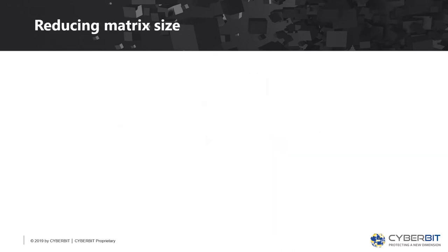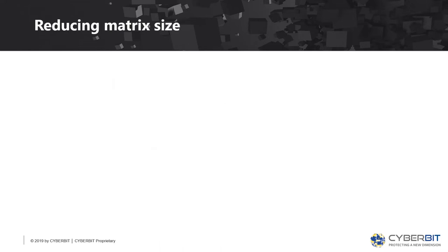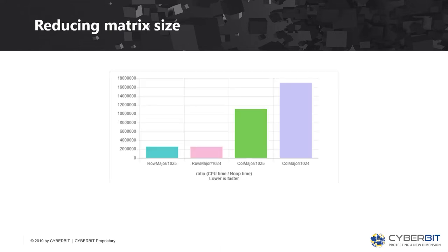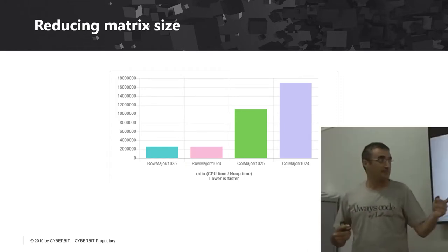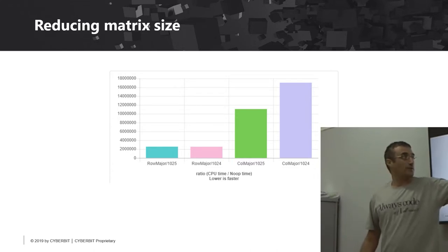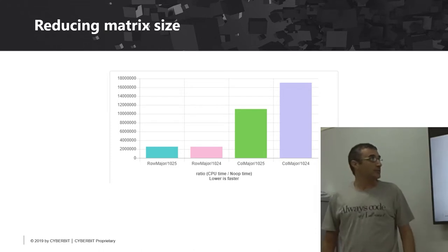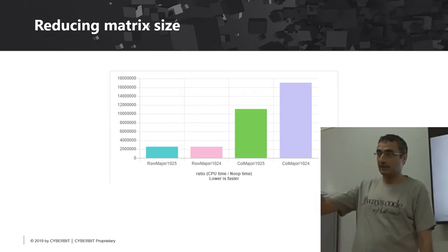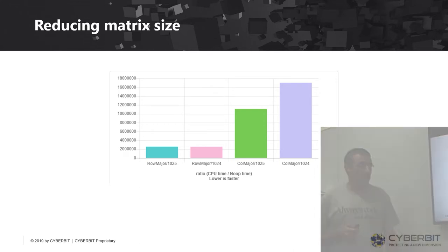What happens if we change the matrix size? This matrix was 1025 by 1025. If we reduce it by 1 to 1024, the 1024 version actually performs much worse — almost half the performance. To understand why, we need to understand a bit more about cache management.